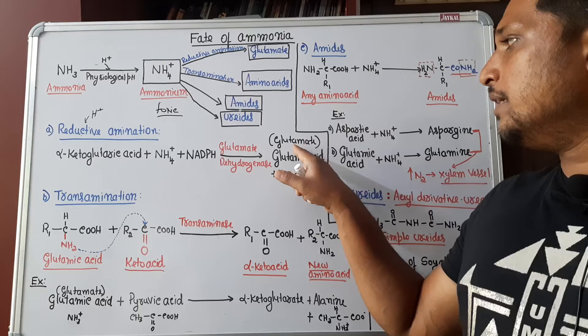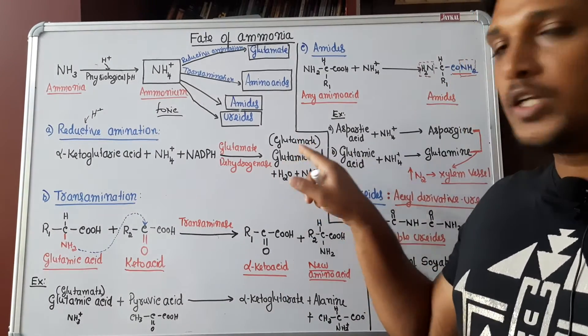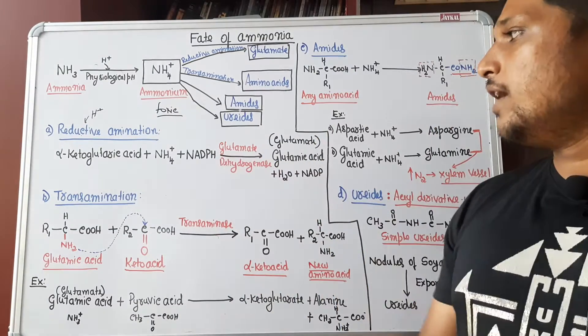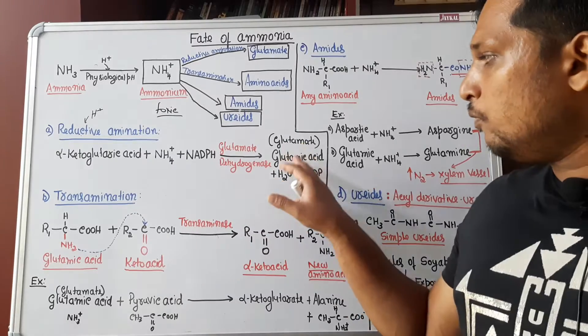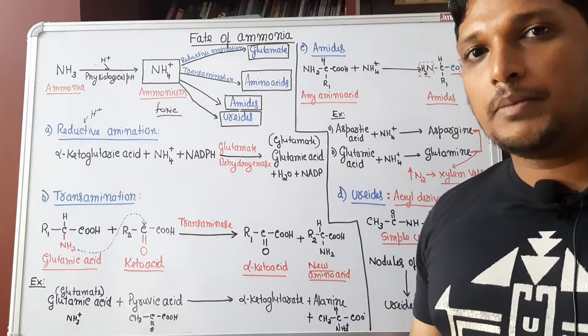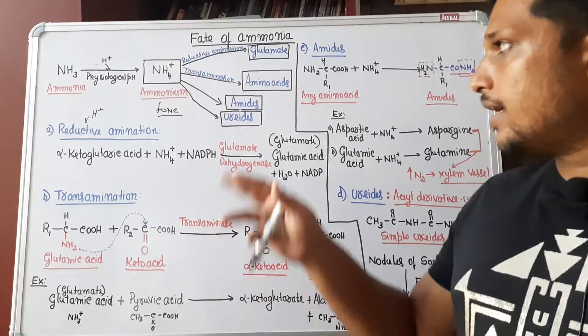Glutamic acid, NCERT mentions it as glutamate. Glutamate is nothing but negative ion form of glutamic acid. Glutamic acid is an amino acid, that is known as reductive amination. Now, only one amino acid is formed in the plant so far. Plants need other amino acids also. How do they prepare other amino acids?